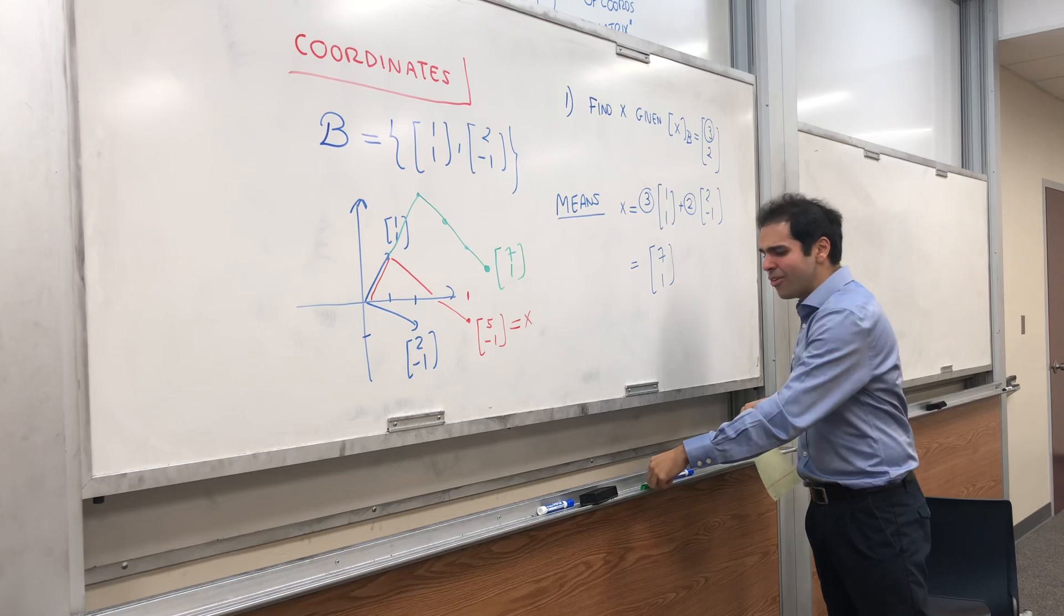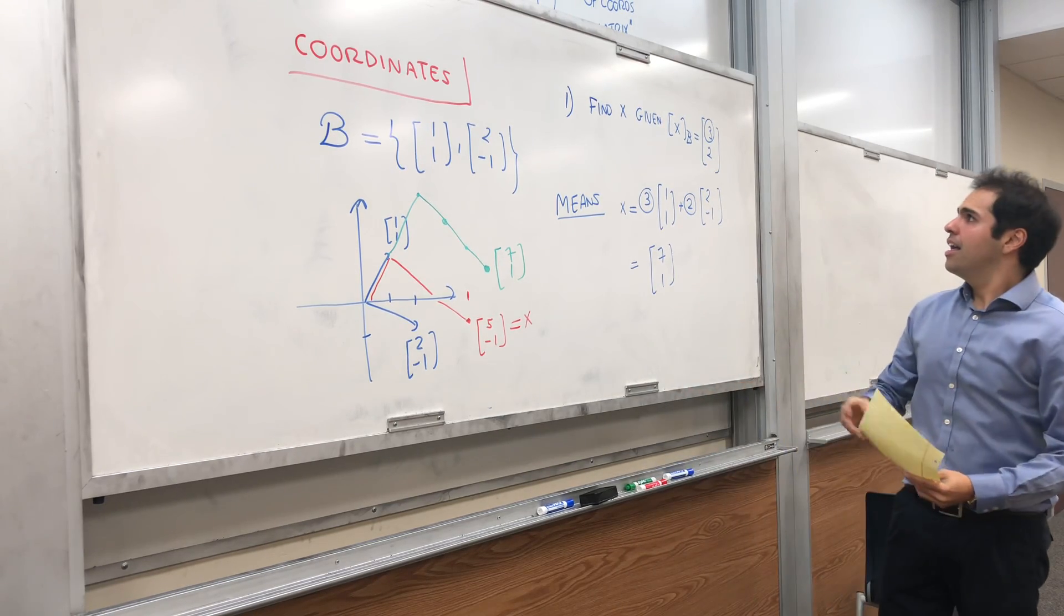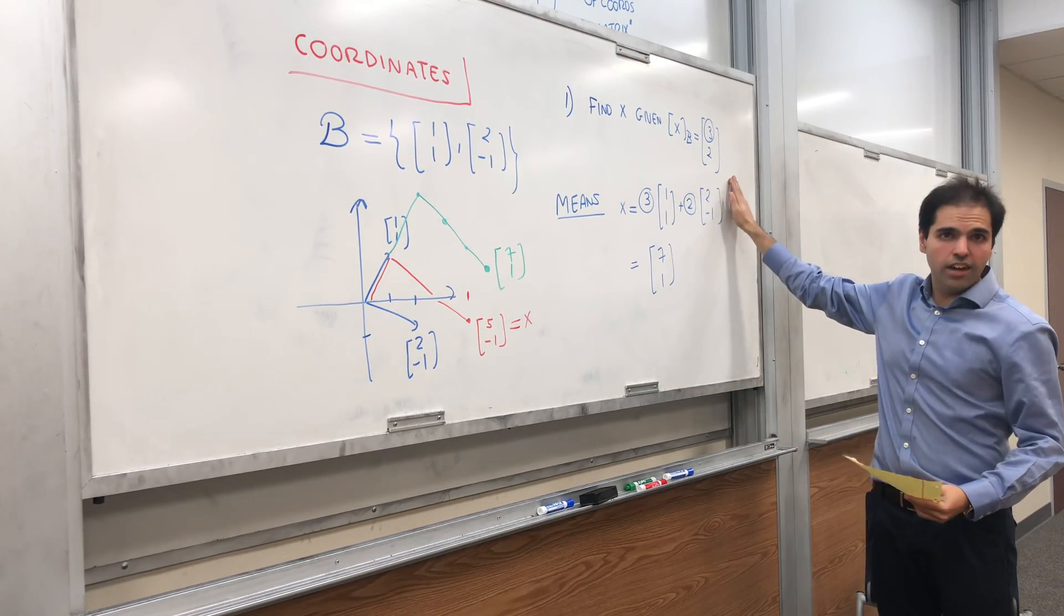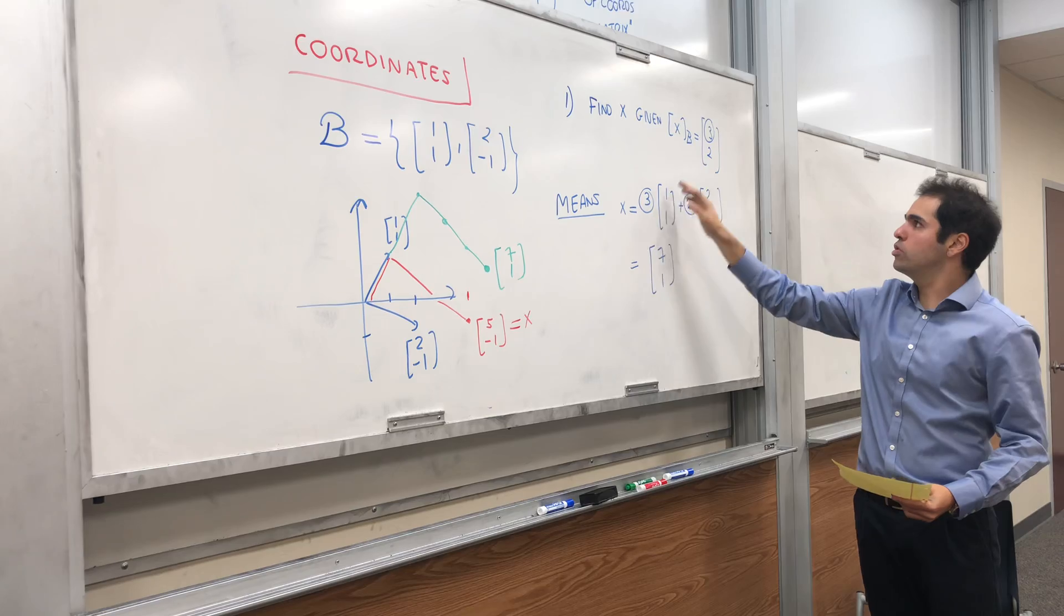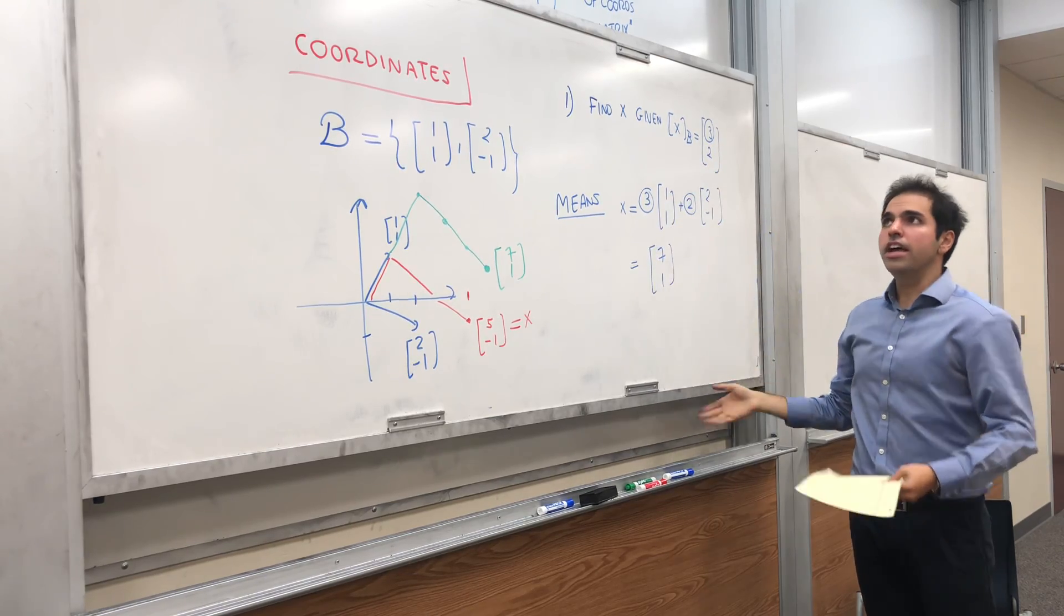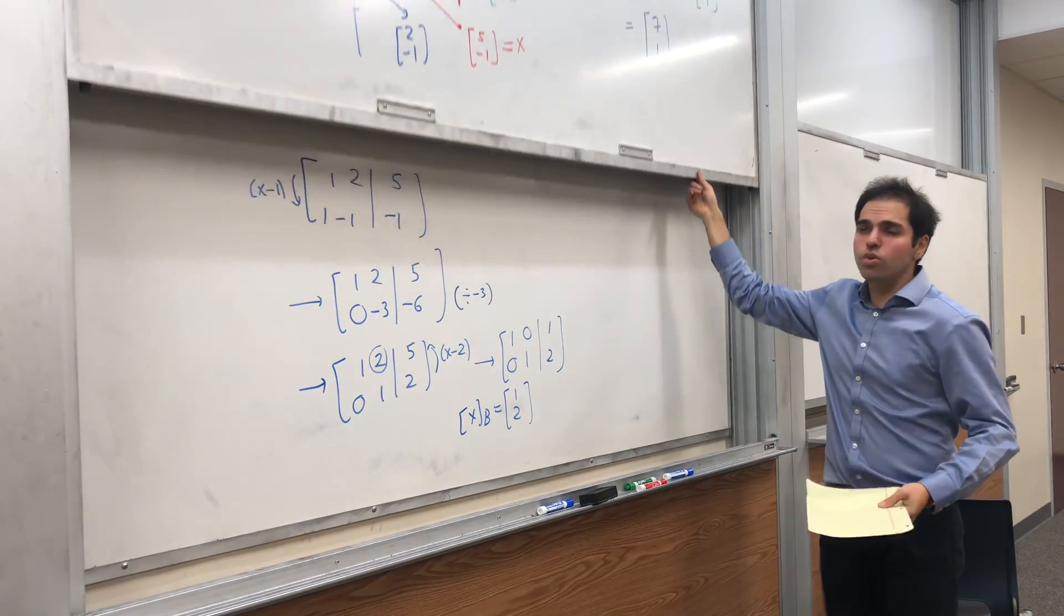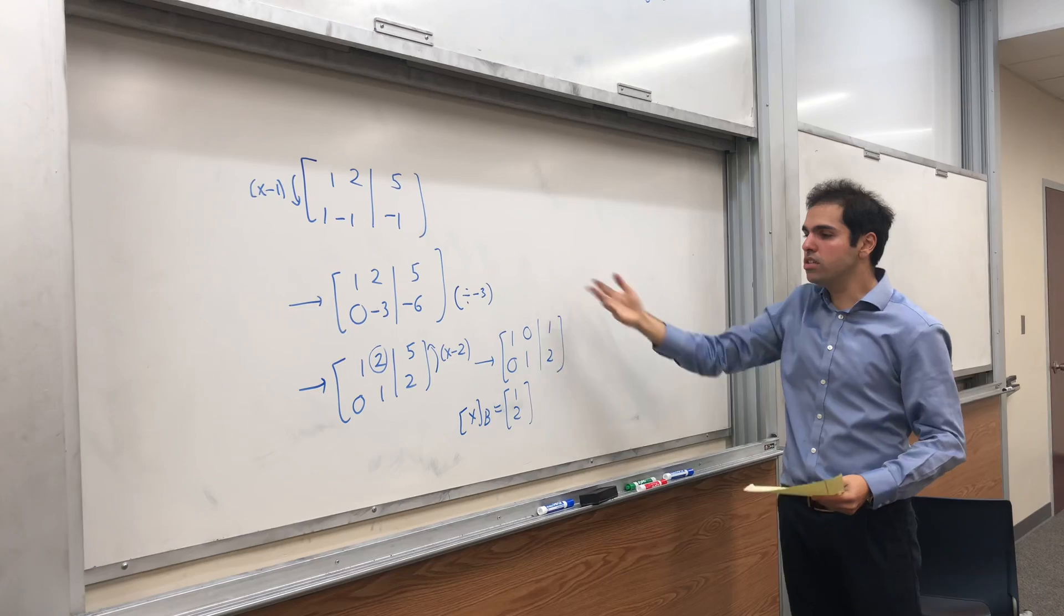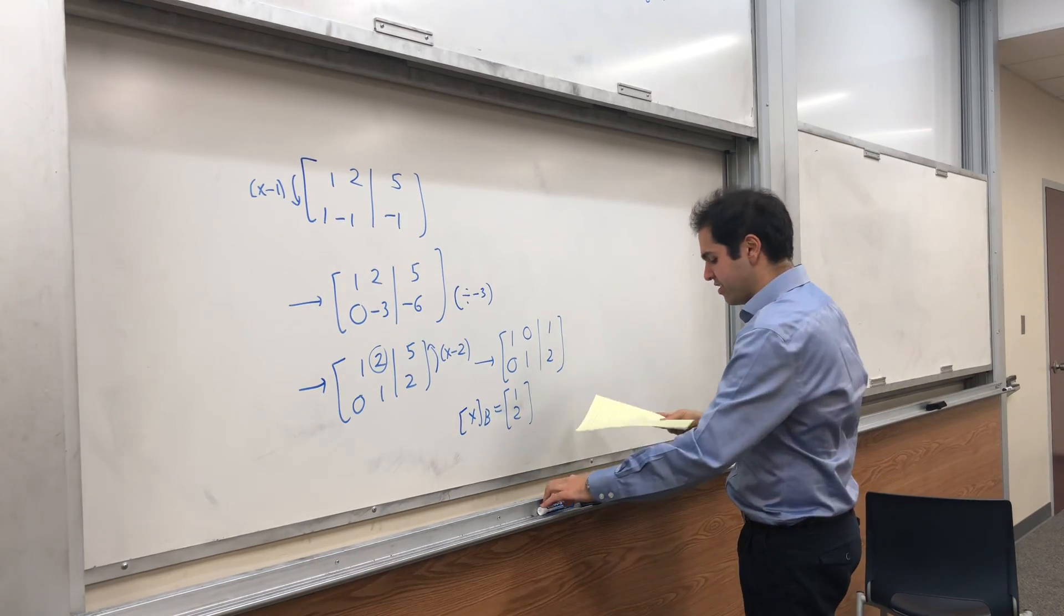So cool. So in other words, what do we need to know? It's easy to read off a barcode because you just plug in the numbers here. It's harder to produce barcodes because you need to actually solve a system of equations.